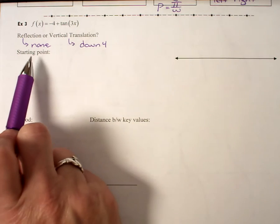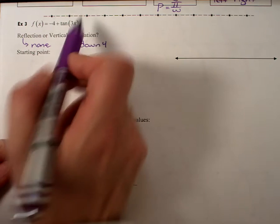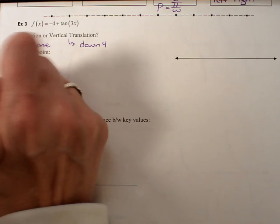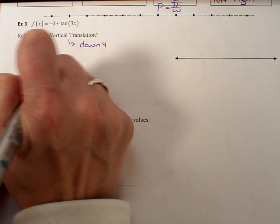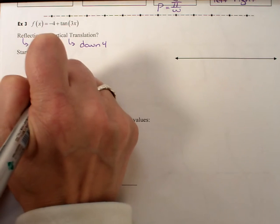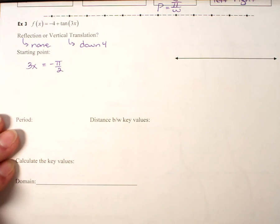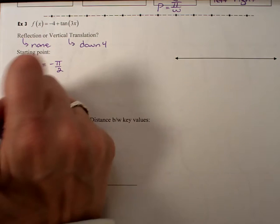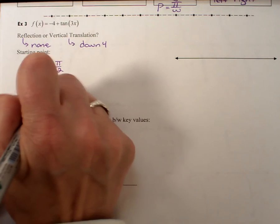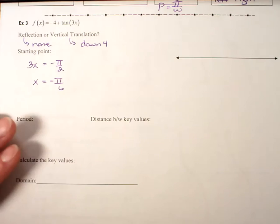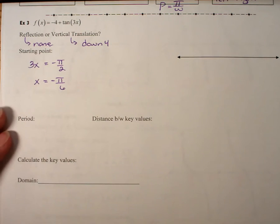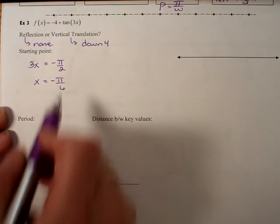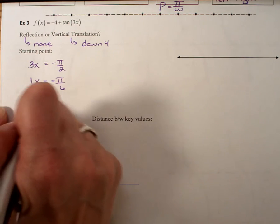My starting point, always thinking about the parent function, I take this entire expression of 3x, and I'm going to set that equal to my negative π/2. I can solve that equation, and I'm going to get x equals negative π/6. That's multiplying both sides by 3, or dividing both sides by 3, or multiplying by 1/3. So my starting point is going to be negative π/6.